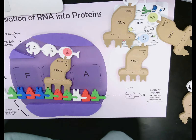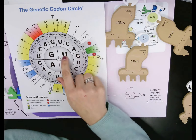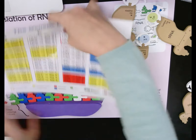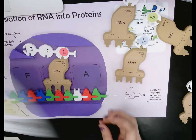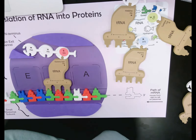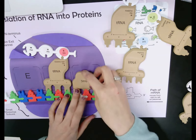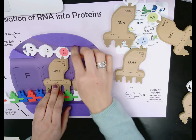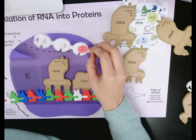Now we reach UAG. UAG is an example of a stop codon — you could also use UAA or UGA as stop codons. That stop codon signals that the ribosome will stop reading the mRNA sequence. What happens now is this amino acid chain becomes a protein, it is released, and that is what's going to determine the phenotypes, or those physical characteristics, in our body.